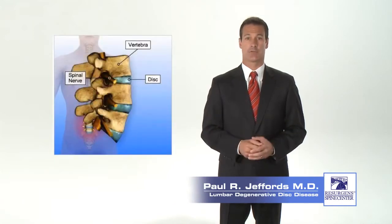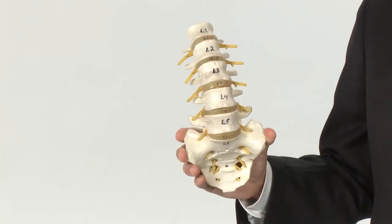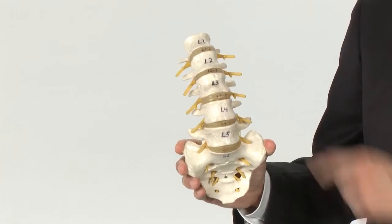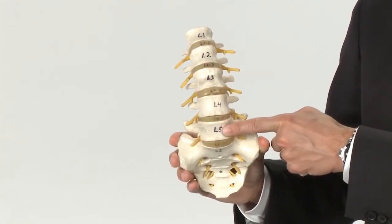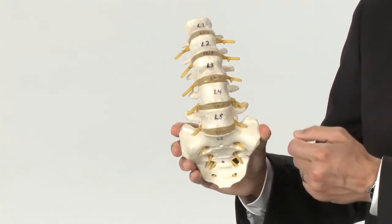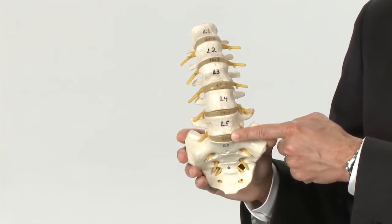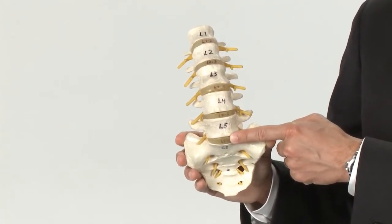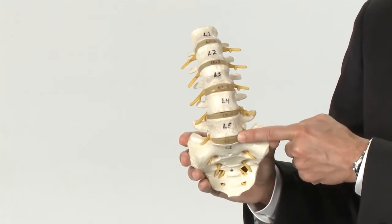The spinal column consists of 33 bones, called vertebra, that are stacked one on top of the other, like building blocks. In the lumbar spine, there are five of these vertebra, labeled L1 through L5. The L5 is at the bottom and sits above the sacrum, or tailbone. In between each of these vertebra, there are spinal discs, which serve as cushions or shock absorbers for the spine. The disc between L4 and L5 is called the L4-5 disc. The bottom disc is called the L5-S1 disc.